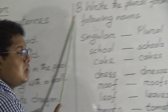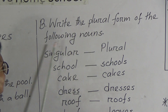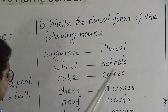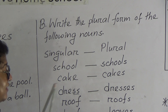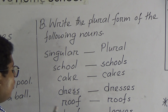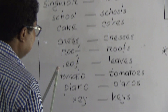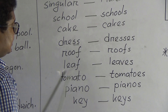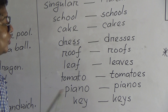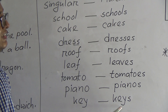Next one is Grammar B: write the plural form of the following nouns — singular and plural: school, schools; cake, cakes; dress, dresses; roof, roofs; leaf, leaves; tomato, tomatoes; piano, pianos; key, keys.